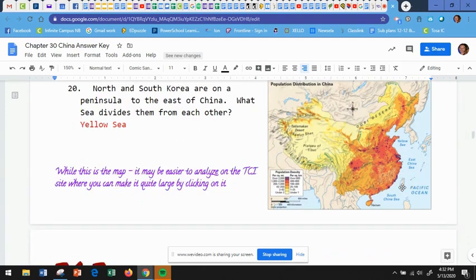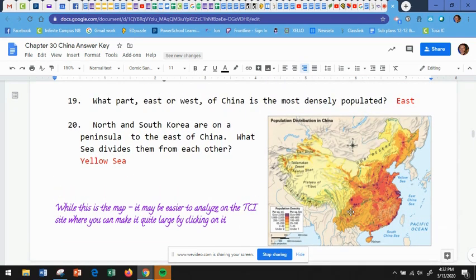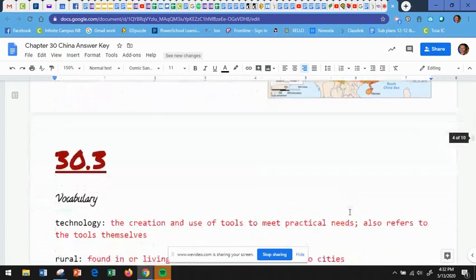So number 20, North and South Korea are this area right here. So this is North Korea and this is South Korea. And what sea divides them? That would be the yellow sea. Then it says, while this is the map, it may be easier to analyze it on TCI. So here you can see the map, but if you can't click on it to make it bigger on here, it is available on TCI.